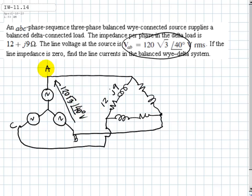If that is that value, then this one here will be 120 root 3 divided by root 3, which is only 120 volts. What about the phase? Let's see.